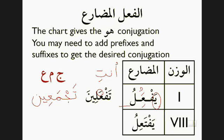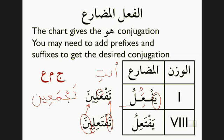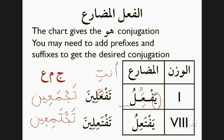What about form 8? How are we going to do that? Well, exact same process. Notice what we did: on the right-hand side we changed the ya to a ta in yafta'ilu, and we added ina to the end — so tafta'ilina. Then we substitute in: the fa letter is the jim, I have another added ta as part of the pattern, the ayn is the meem, the lam is the ayn, add ina to the end. Vowelling it: ta takes fatha, fa takes sukun — tajtami'ina. That's the correct way to vowel tajtami'ina for form 8 of j-m-a.